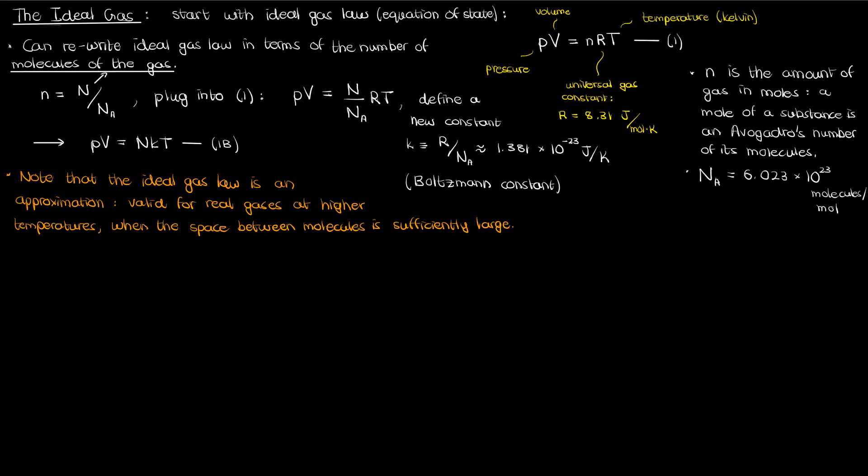So ultimately, in terms of the number of molecules and the Boltzmann constant, the ideal gas law becomes PV equals capital NKT.